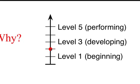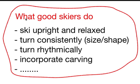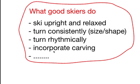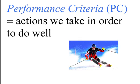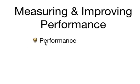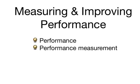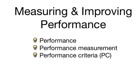Recall that my ski coach told me, here's what good skiers do. He was revealing the things I needed to work on in order to become better. These things are called performance criteria, which is our third concept. Performance criteria are actions we take in order to do well. In summary: performance is something that is worthwhile or useful for people — it's what we care about and the reason why we take classes. Performance measurement is the process of assigning numbers to characterize present levels of performance. And performance criteria are the actions we take in order to do well.